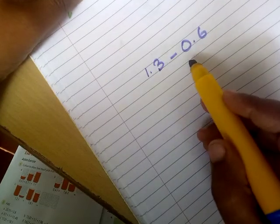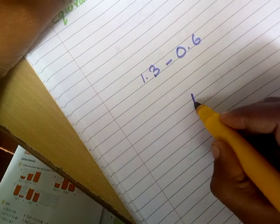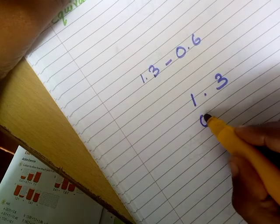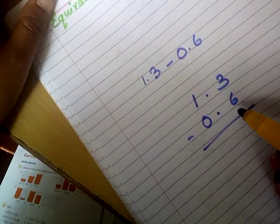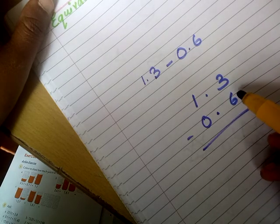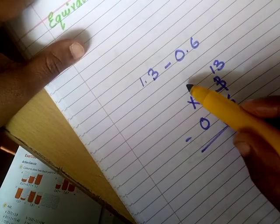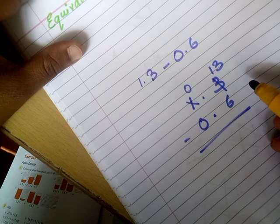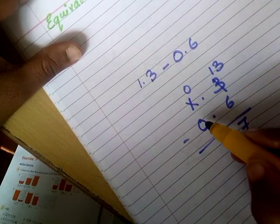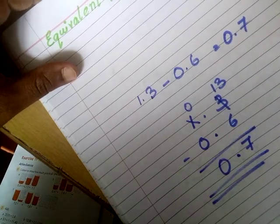Let us see a few more examples. Now look at this: 1.3 minus 0.6. Both are like decimals. Place according to place value: 1.3, and in the second decimal, 0 in the whole number place and 6 in the tenths place. Now subtract: from 3 we have to subtract 6, but 3 is smaller than 6, so we need to regroup from the ones place. 3 becomes 13 and 1 becomes 0. From 13 subtract 6 gives 7. Insert the decimal point, then 0 minus 0 is 0. So the answer is 0.7.